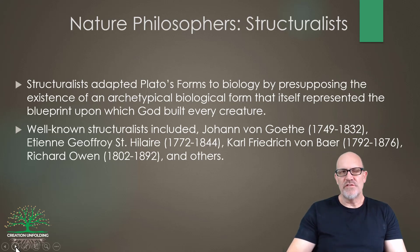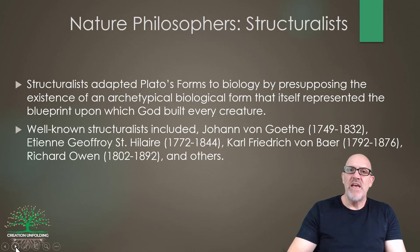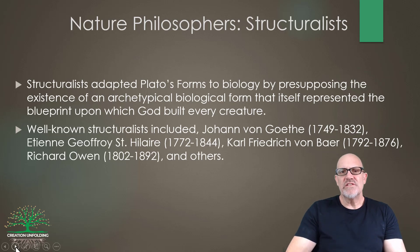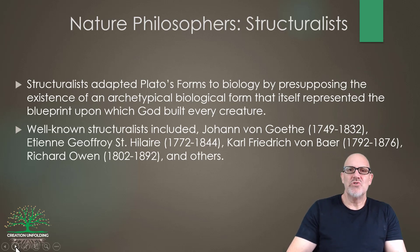The nature philosophers and structuralists included Johann von Goethe, Etienne Geoffroy Saint-Hilaire, Carl Friedrich von Baer, and of course Richard Owen. These ideas began to spring forth in about the 1700s. They had eclectic religious views — some were deists, some pantheists, some committed Orthodox Christians, others had a more liberal view of Christianity.